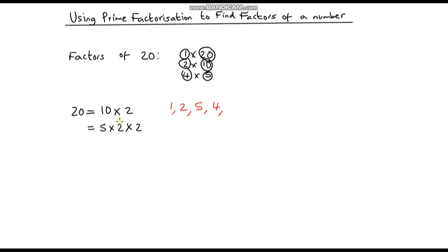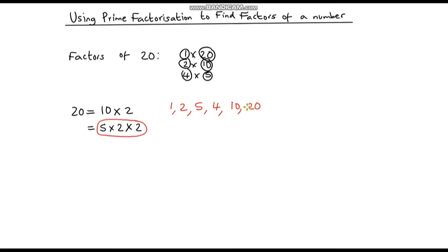What other combinations do I have? Well, 5 times 2 is 10, so that's another factor. And finally, 5 times 2 times 2 is also a factor — 5 times 2 times 2 is 20, which is just the number we started with. We have got all six factors of 20.